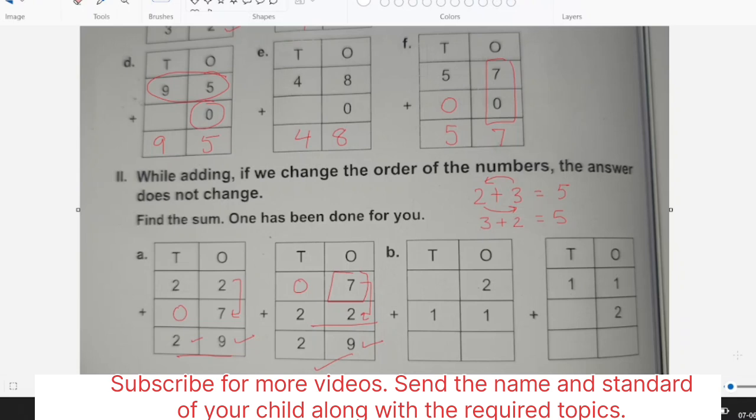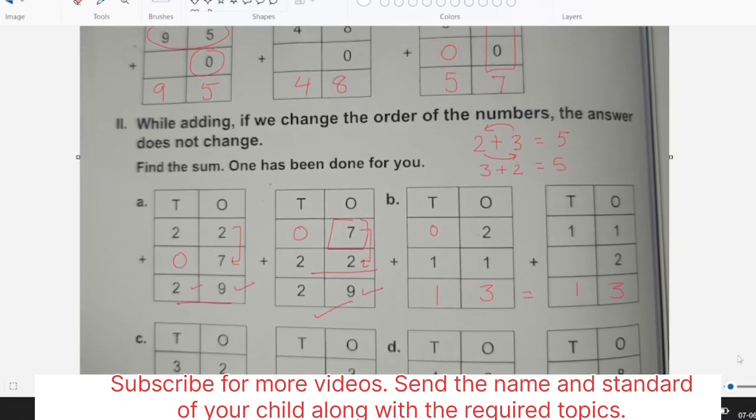Similarly one more example, it is 2 plus 11. So 2 plus 1 is 3 and 1 here it is 1 only because there is no number. Now first we are writing 11 and then 2, adding 11 and 2 - 2 plus 1 is 3 and this is 1, so we are getting the same answers. This is the second addition fact.